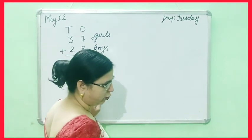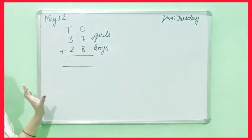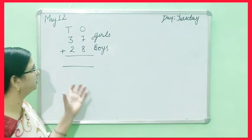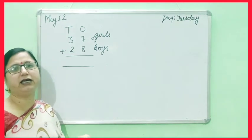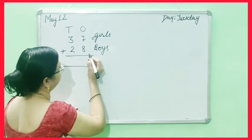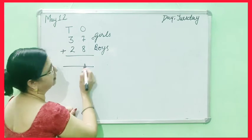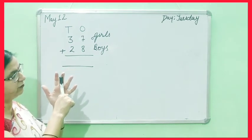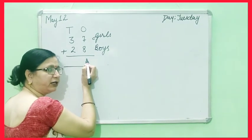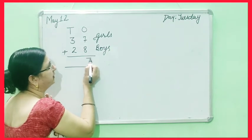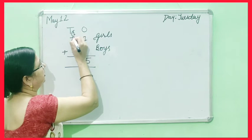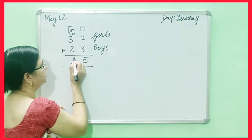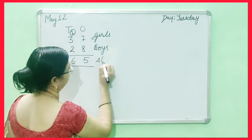Now we have to tell how many students are there in school. 37 girls and 28 boys, total students. How do we know? We will add. 8 and 7 is 15. Write 5 and carry 1. 3 and 2 is 5, plus 1 is 6. 65 students. It will be right here.